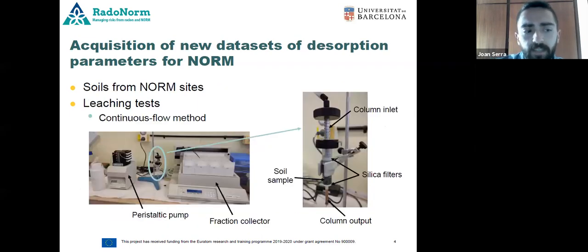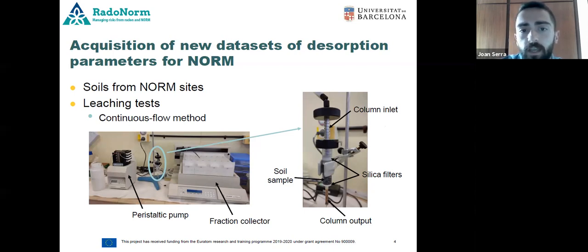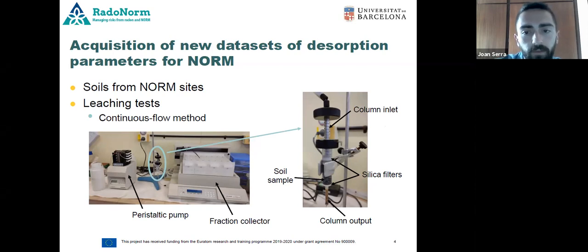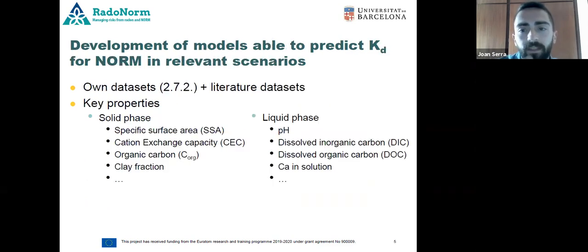With soils coming from NORM sites, we will perform leaching tests to obtain information about NORM remobilization in different soils, as well as calculating sorption Kd values. As we can see in these photos, these experiments will be carried out through a continuous flow absorption technique, with a solution dispensed through a column packed with soil, and effluent fractions collected at the end of the column at specified time intervals.